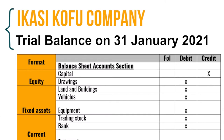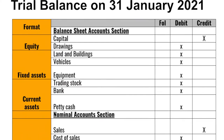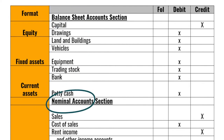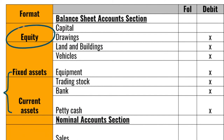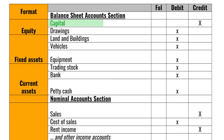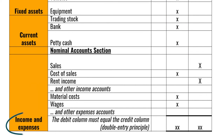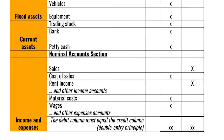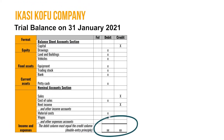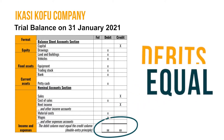The first thing we need to do is start at the heading of the trial balance: the name of the business — Ikasi Kofu Kambani — Trial Balance on the 31st of January 2021. Start with the balance sheet section and then the nominal account section. The balance sheet section consists of equity and asset accounts. Capital increases your owner's equity balance on the credit side. Drawings decrease your owner's equity balance on the debit side. All assets increase on the debit side. The nominal account section consists of income and expense accounts only.